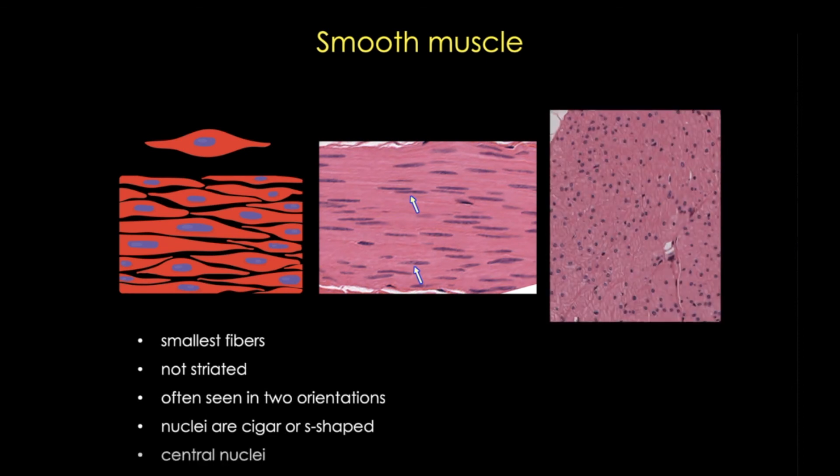Now like cardiac muscle, smooth muscle nuclei are centrally located, and again there's just one per cell, as you can see in this transverse section. But in general, smooth muscle cells are much smaller than cardiac muscle cells.